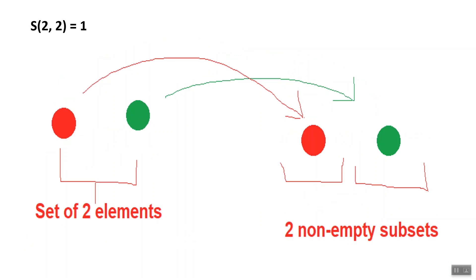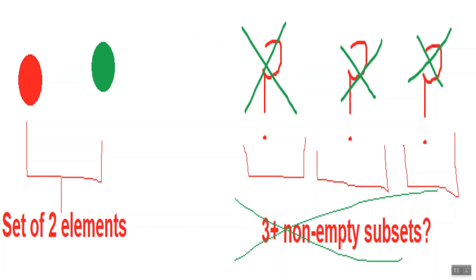All that matters is which elements are paired with which other element in the same subset. There's also only one way we can partition the set of two elements into two non-empty subsets. That is, we can split the red dot from the green dot, placing each in its own subset. So S(2,2) equals 1. And as before, when we tried to split the set of one element into two non-empty subsets, there is no way we can partition the set of two elements into more than two non-empty subsets.